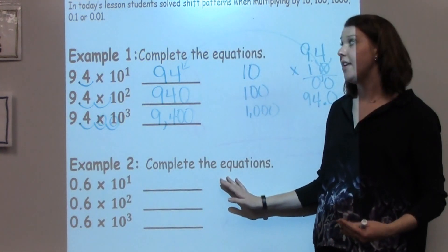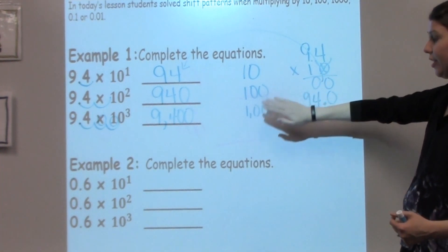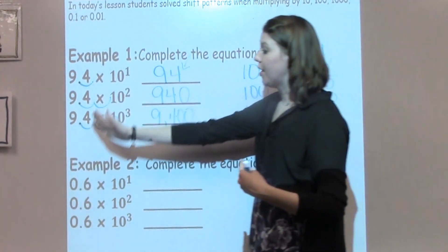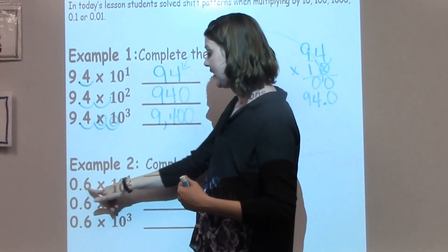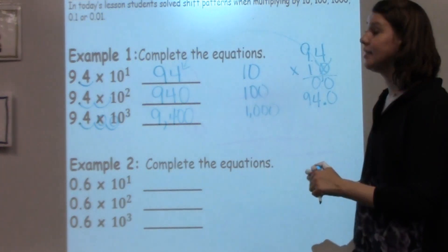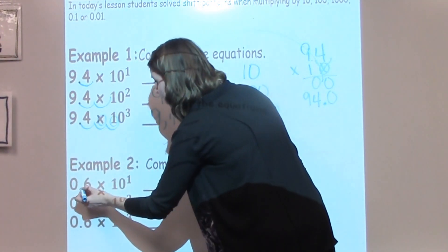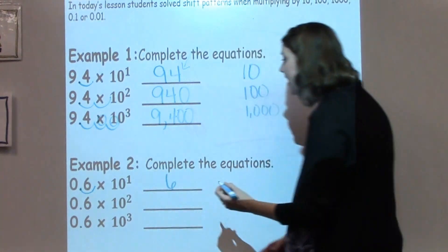For example 2, we're going to think about the same thing. We're going to know that 10 to the first power is 10, 10 to the second power is 100, and 10 to the third power is 1,000. Looking at this, we don't have a whole number in front of our decimal this time, we just have 0.6. So we have 0.6 times 10 to the first power, which is the same as 0.6 times 10. Now if I'm going to solve this one, I know I'm going to shift it just 1 to the right, which would then give me the whole number of 6.